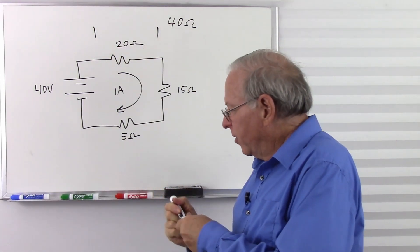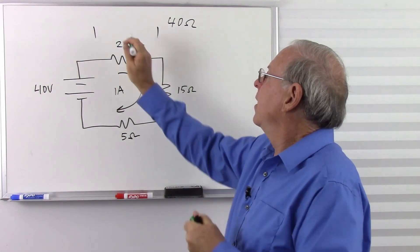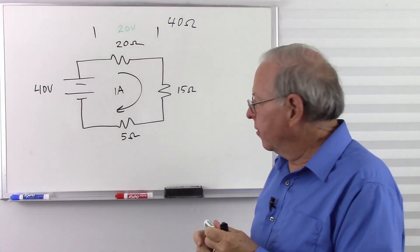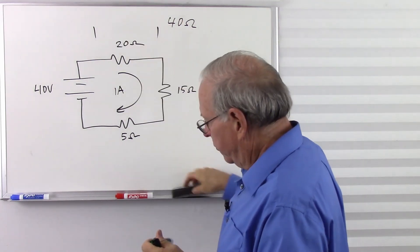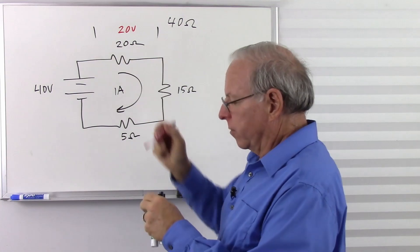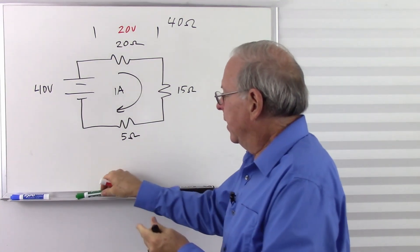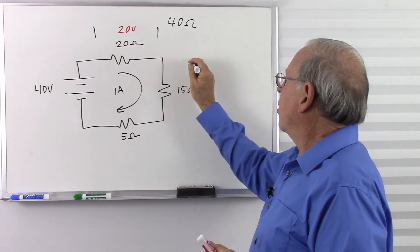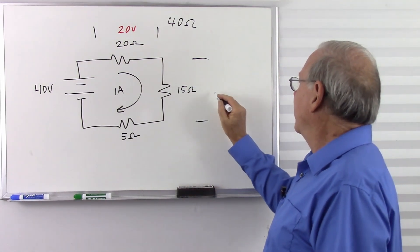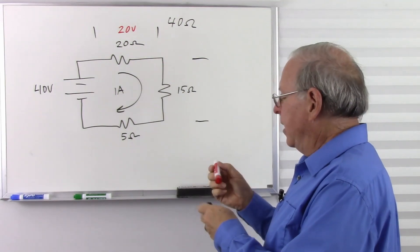of course we're going to have 20 volts. Let's do that in red, because I don't think that shows up too well on the camera. Let's make that 20 volts. And over here, you can do the Ohm's law in your head if you want to. 1 amp, 15 ohms. Multiply them together.